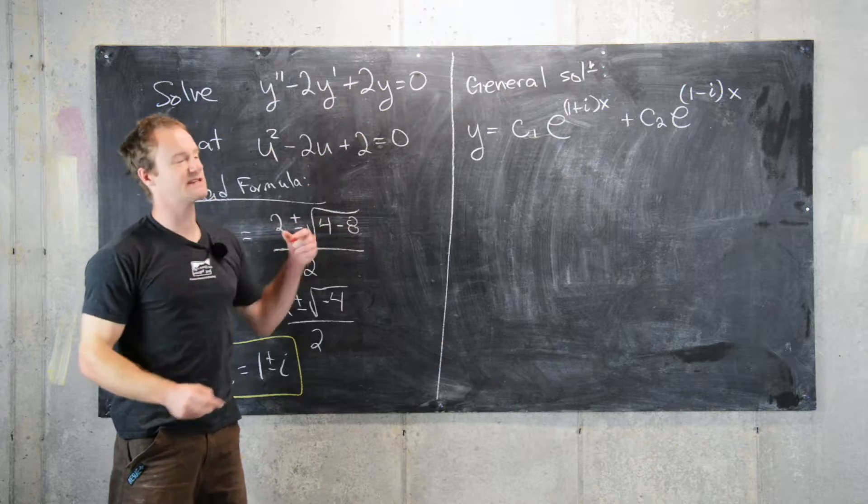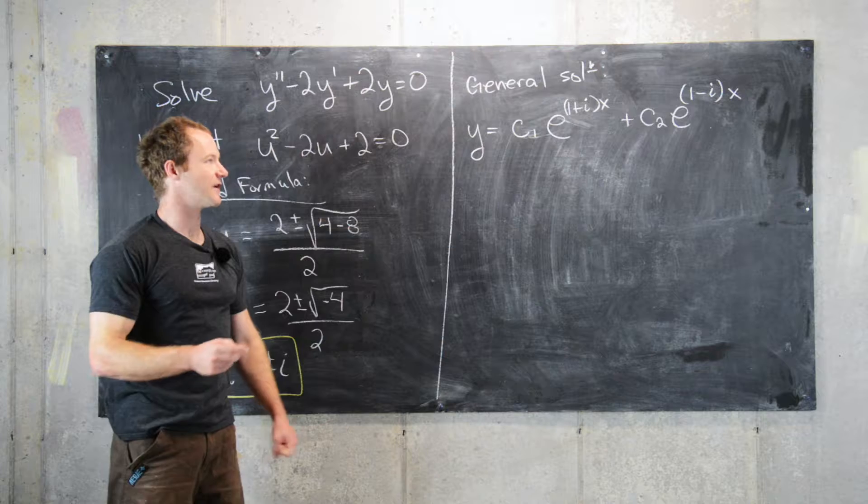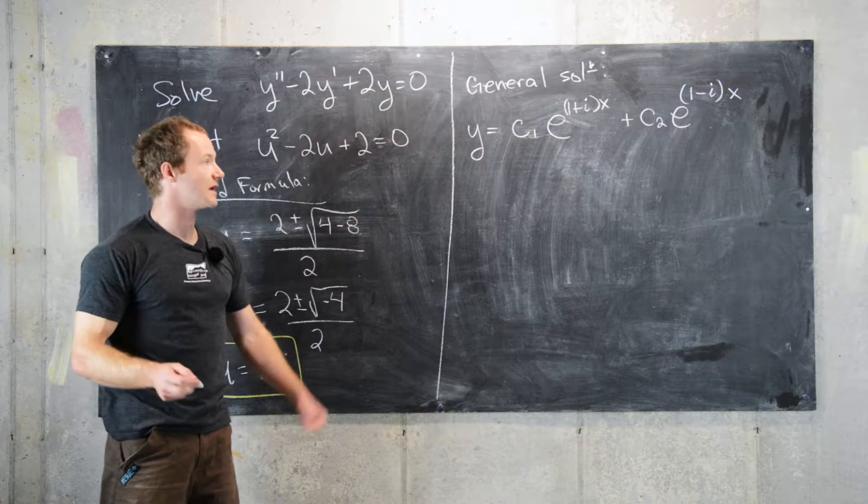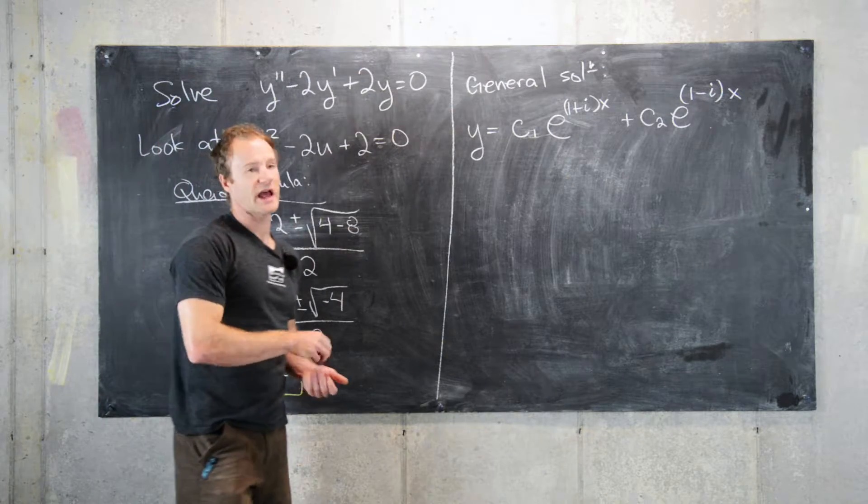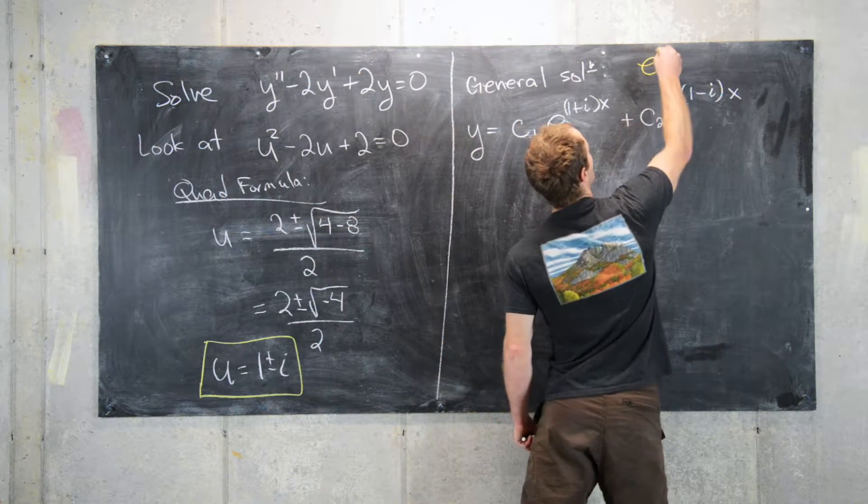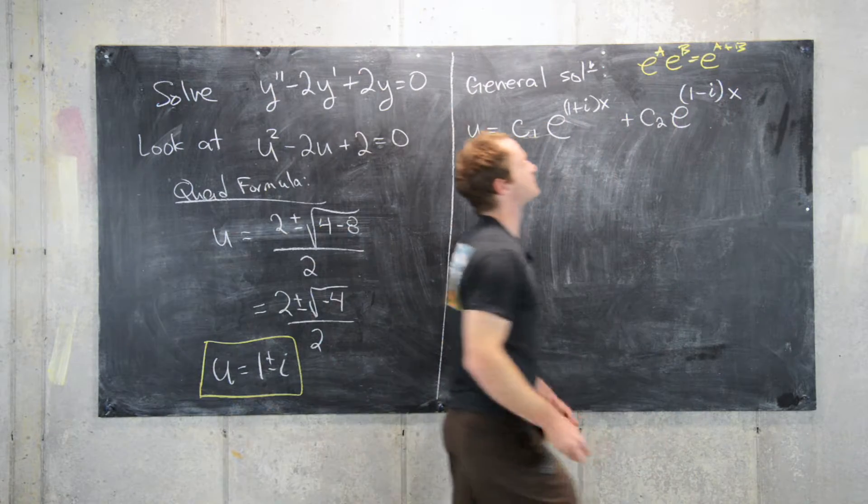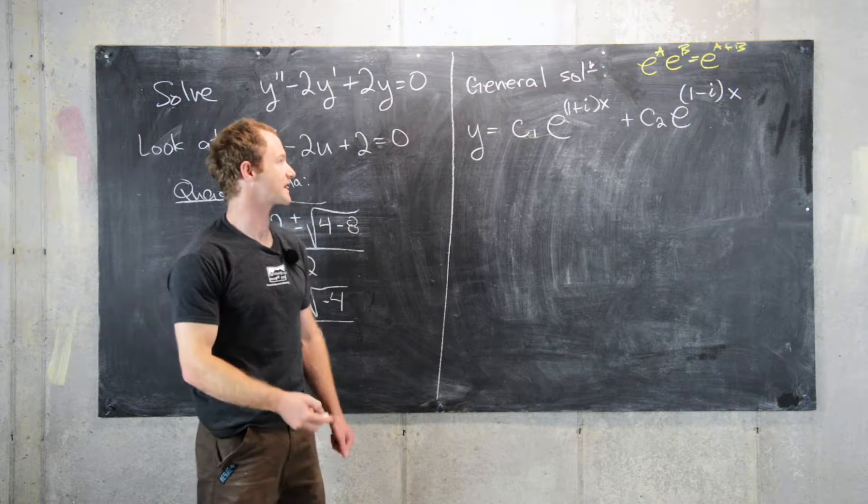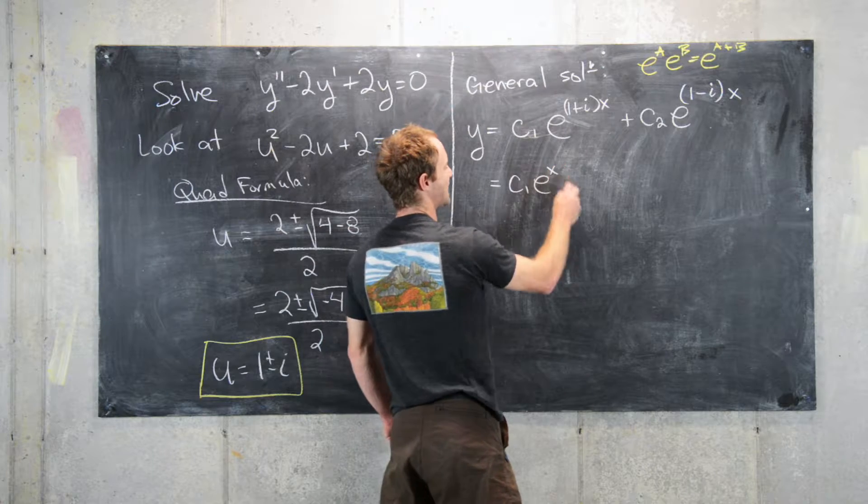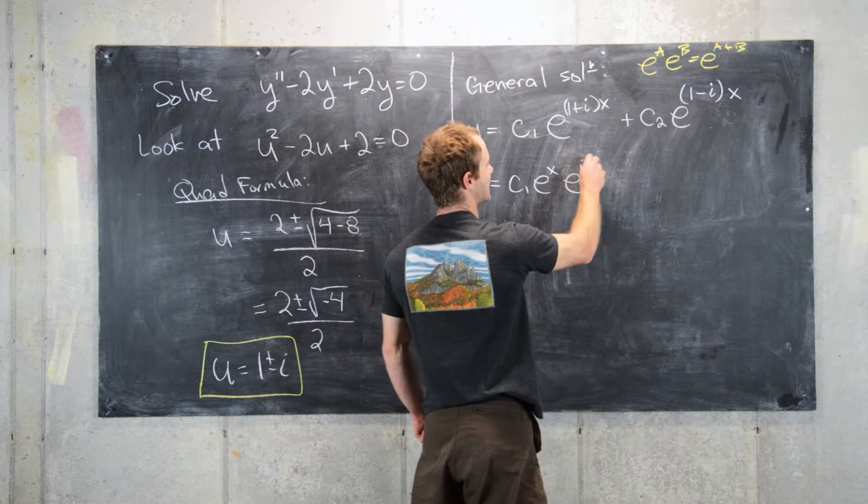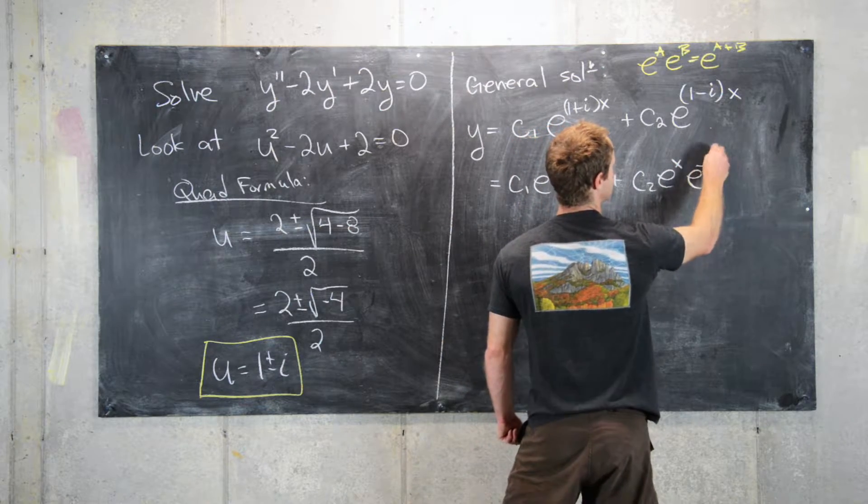Okay, so this may seem like a problem because we want a real function, but we have a function that contains complex numbers, but there's a way out of this, so we'll use the following exponent rule. So we can use e to the a times e to the b equals e to the a plus b, which is true for all complex numbers. So that will allow us to write this as c1 e to the x times e to the i x plus c2 e to the x e to the minus i x.